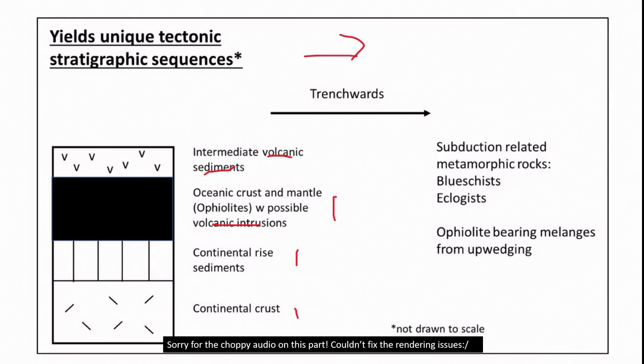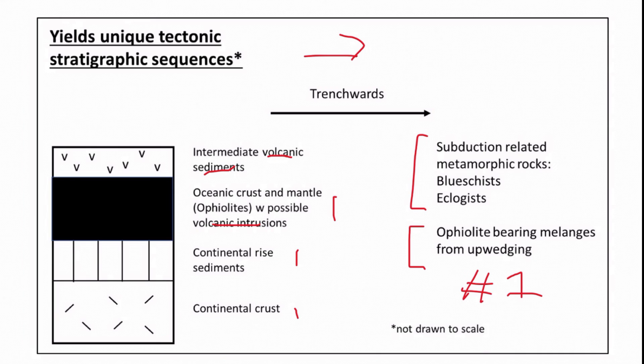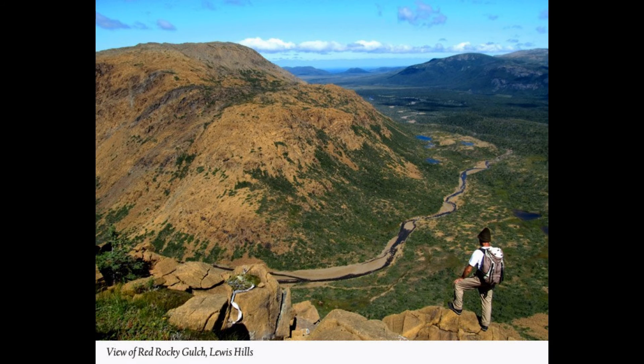Moving laterally trench-wards, we would expect to see subduction-related metamorphic rocks like blueschist and also ophiolite-bearing melange, formed by the up-waging process described earlier. And in fact, this general sequence is what we observe in the coastal complex in Newfoundland, Canada right now.